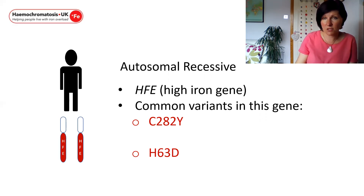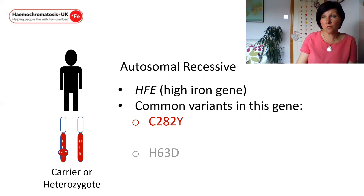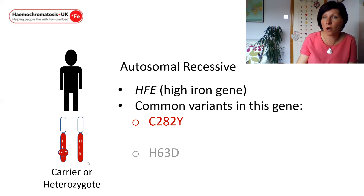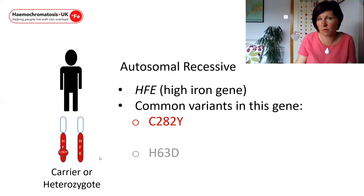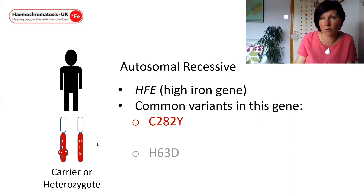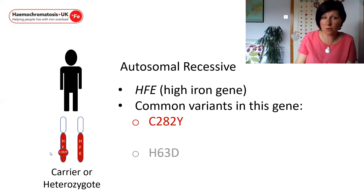C282Y is a variant which causes a dramatic reduction in the amount of protein present. The man shown on the slide has inherited just one C282Y and therefore will have a slightly reduced amount of protein, but because he has another copy which is compensating and producing the right amount of protein, this man shouldn't ever develop symptoms. Occasionally, patients who are carriers can develop symptoms, but that's when you might want to think about other causes of hemochromatosis which might be contributing. When a person has one copy of C282Y, they're known as a C282Y heterozygote or carrier.